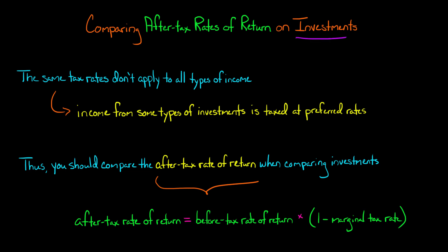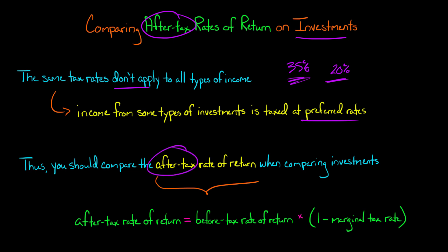In this video I'm going to show you how to compare investments by looking at their after-tax rates of return. Note that the same tax rates don't apply to all types of income — certain investments are taxed at preferential rates. You want to take these tax rates into consideration when determining your return as an investor, because tax rates affect how much cash you're left with. You calculate the after-tax rate of return by taking the before-tax rate of return and multiplying it by one minus the marginal tax rate for that investment.